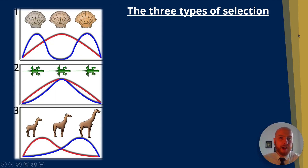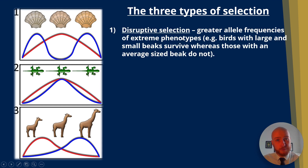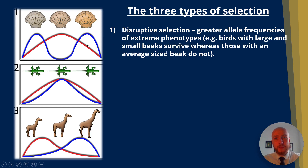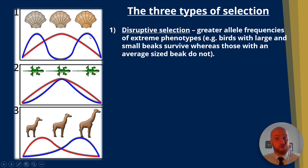There are three key types of selection for AQA A-level biology. The first is disruptive selection, where greater allele frequencies of extreme phenotypes are selected for. In the diagram the red line represents more organisms around the mean value, while the blue line shows disruptive selection where the extremes are favoured.